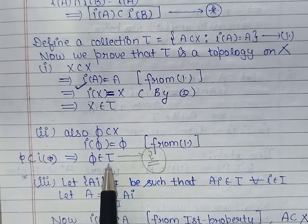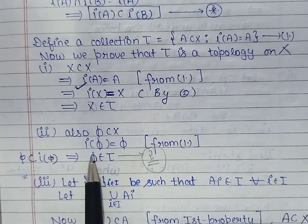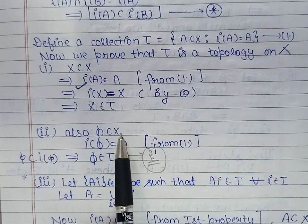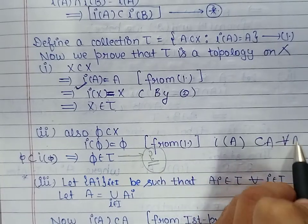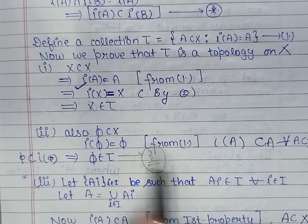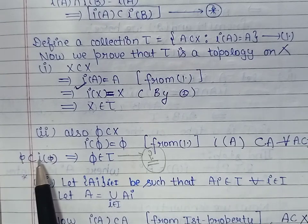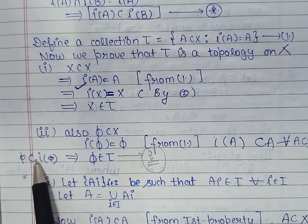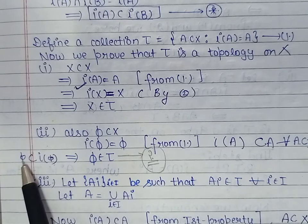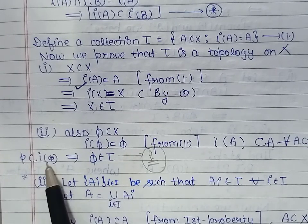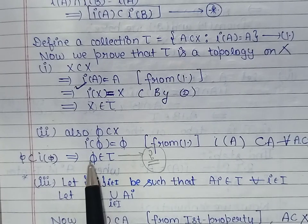Next, we show that φ belongs to τ, meaning I of φ equals φ. By the first property, I of A is contained in A for every subset A of X, so I of φ is contained in φ. Also, φ is a subset of every set, so φ is contained in I of φ. Combining these two conditions, I of φ is contained in φ and φ is contained in I of φ, giving I of φ equal to φ. By definition of τ, φ belongs to τ.